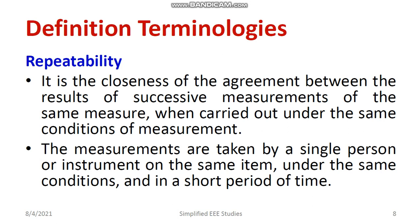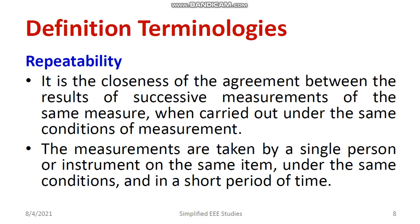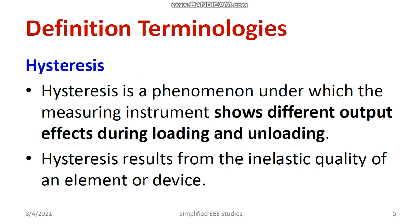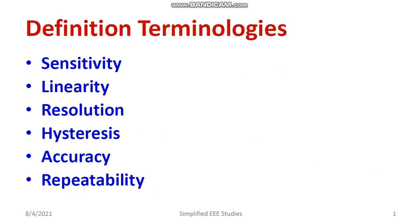In this session we discussed the different terminologies used in sensors and transducers, such as repeatability, accuracy, hysteresis, resolution, linearity, and sensitivity. Hope these terminologies will be helpful for understanding more about sensors and transducers. If you have any queries, please put them in the comment box and I will surely revert. Thank you for watching this video.